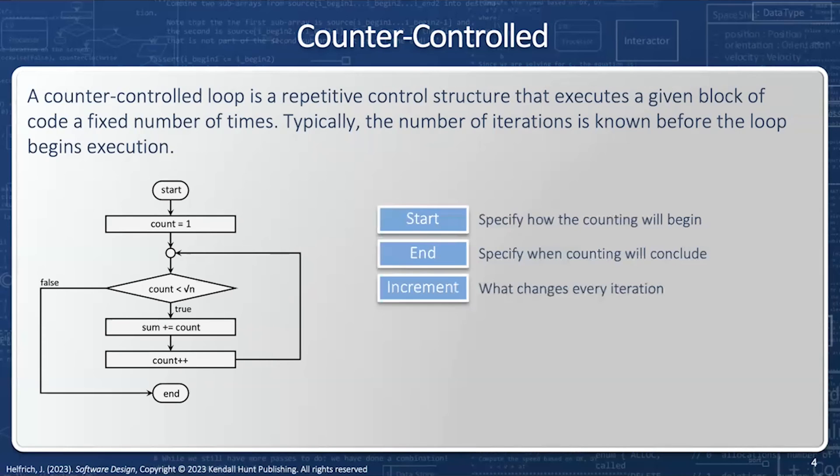The third is the increment. I want to know how much I'm going to increase my counter by. And the final bit is the body loop, what happens every iteration. Whenever I have a counter control loop problem, I should ask myself these four questions, and these four questions have specific parts in the code.